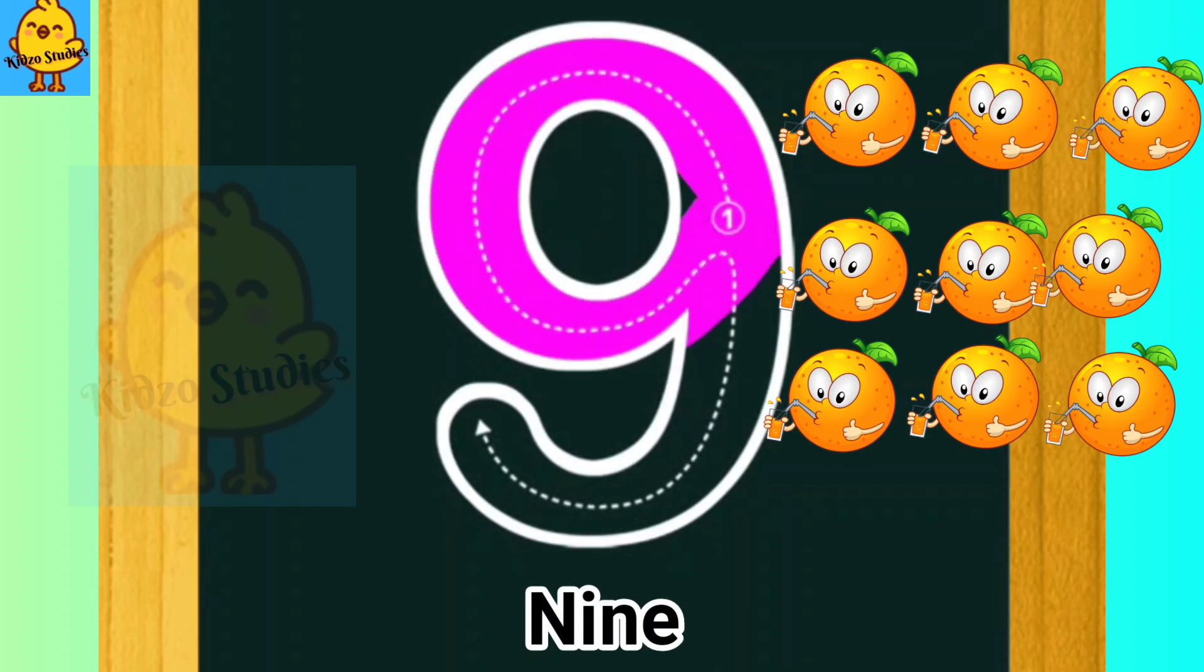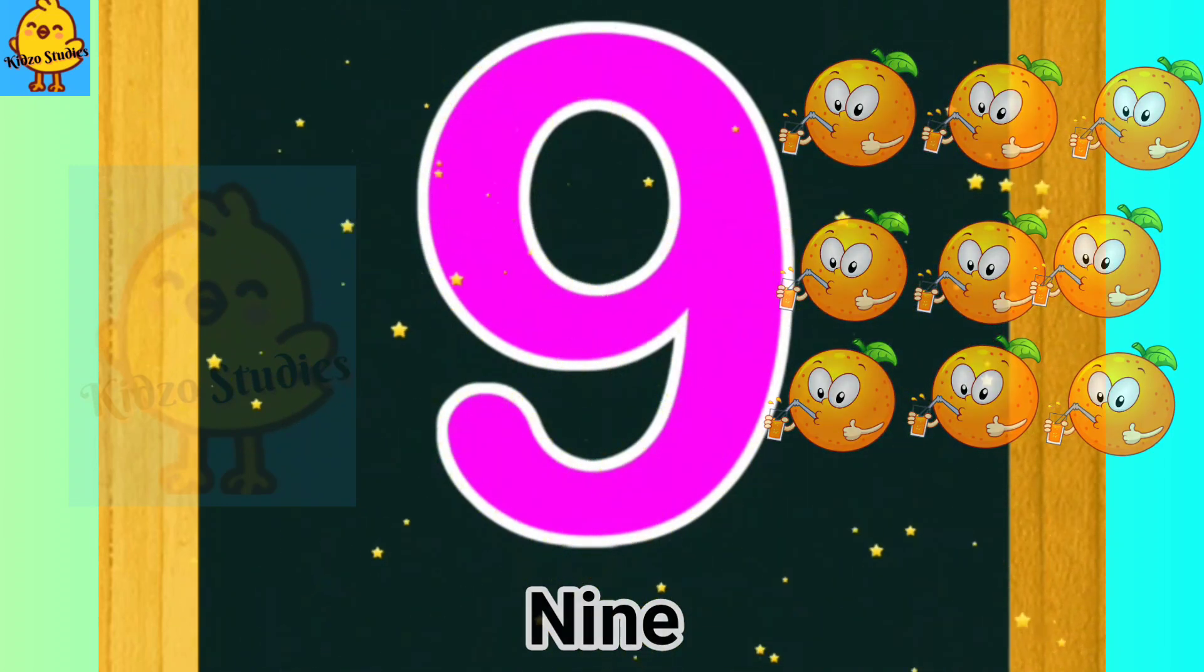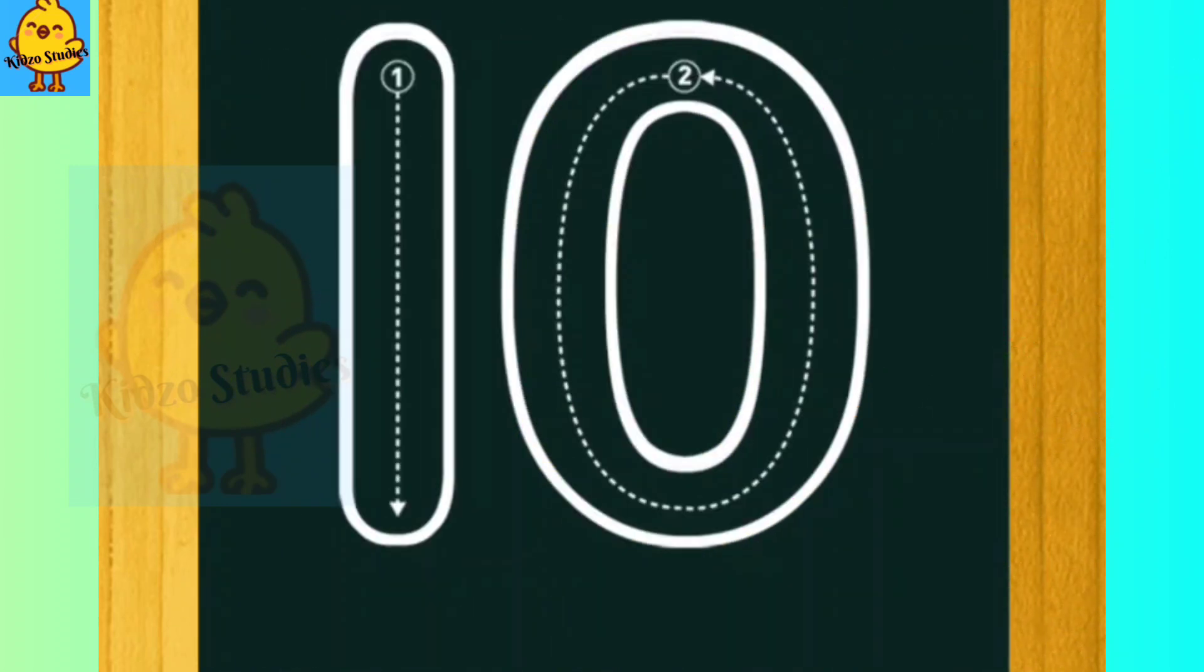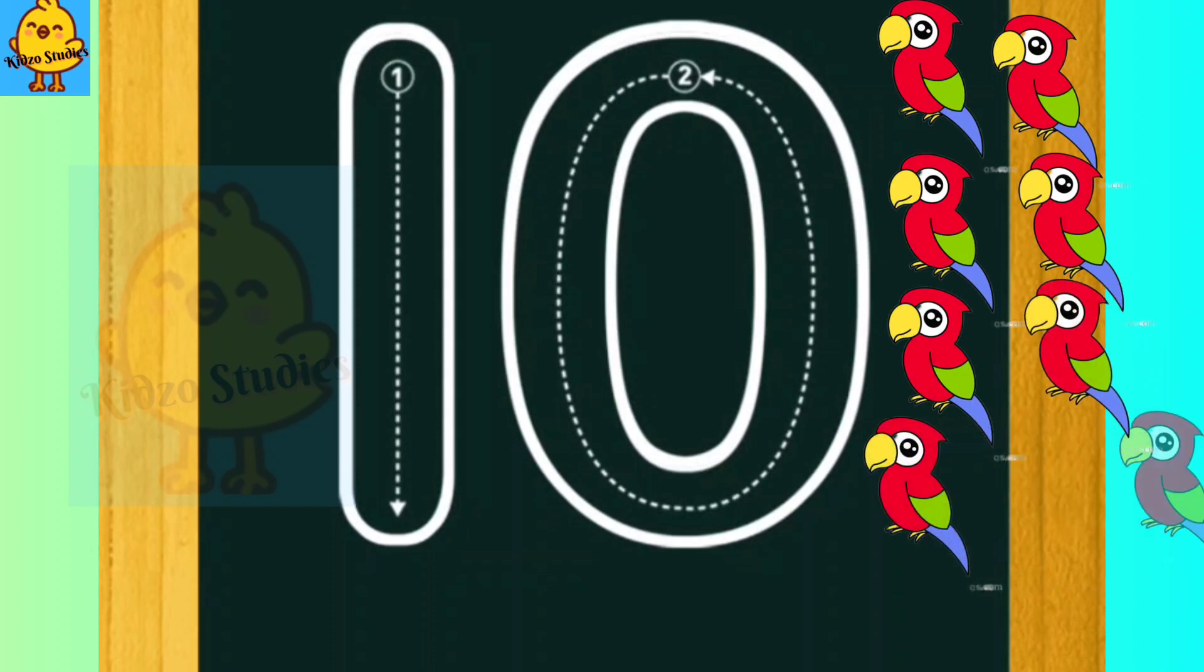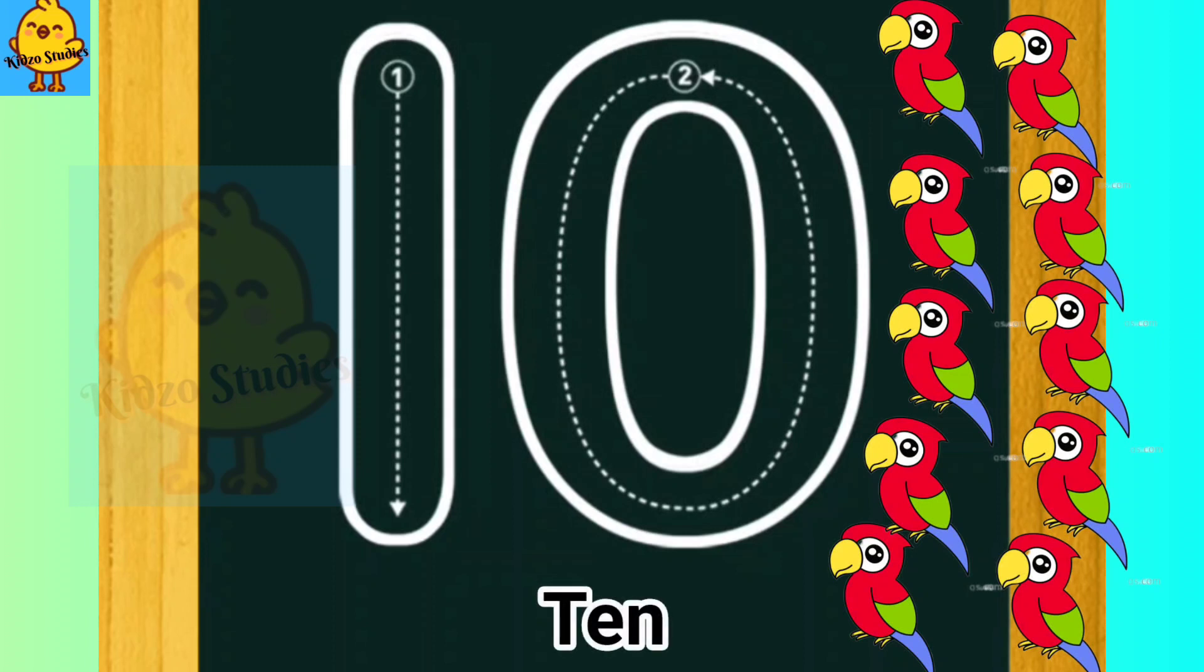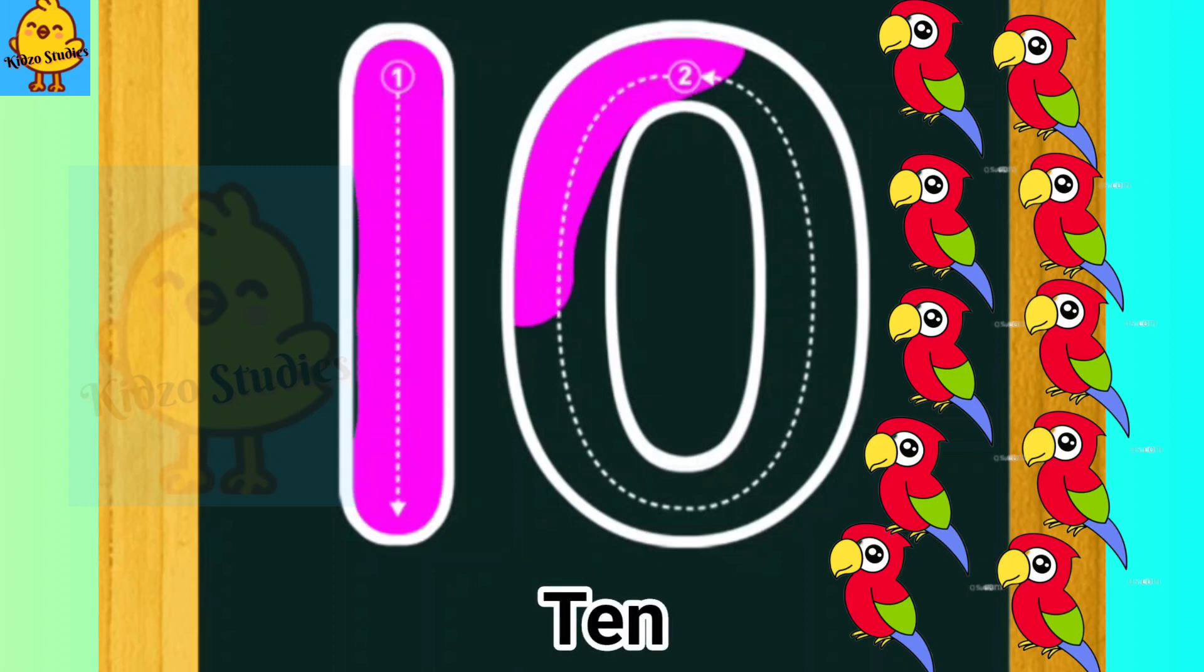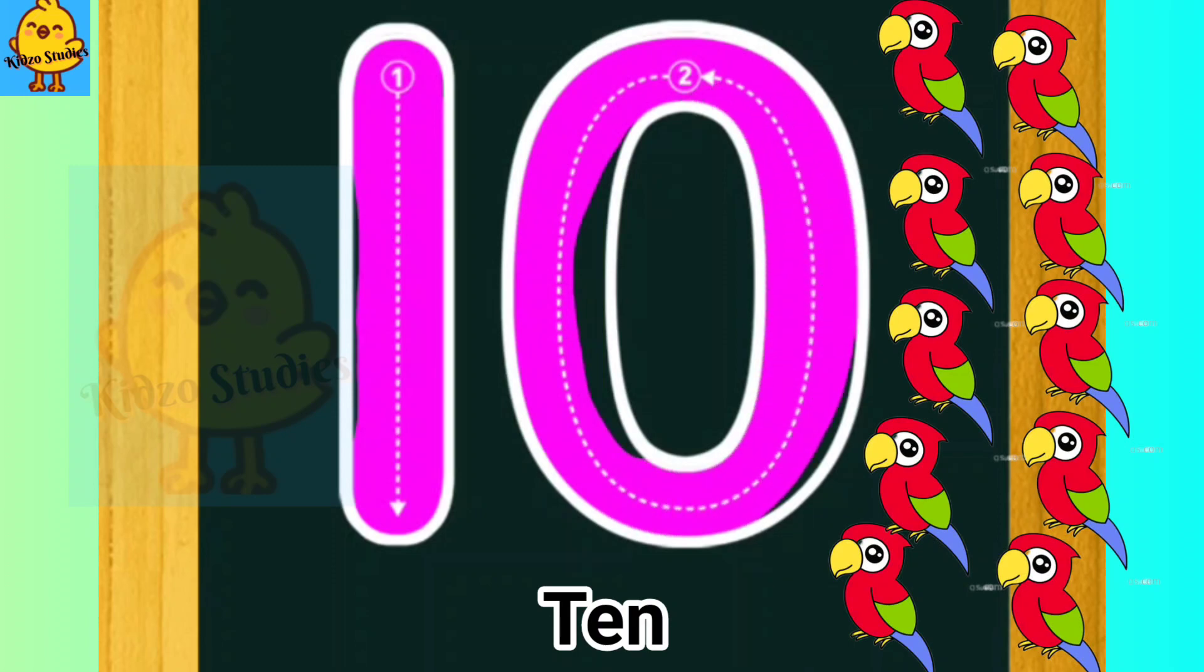1, 2, 3, 4, 5, 6, 7, 8, 9, 10. 10 parrots. T, E, N, 10. 10 parrots.